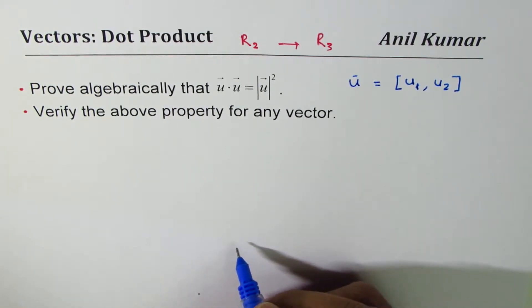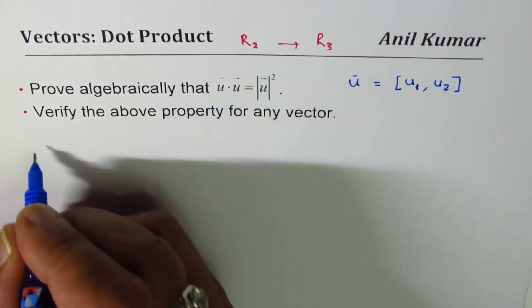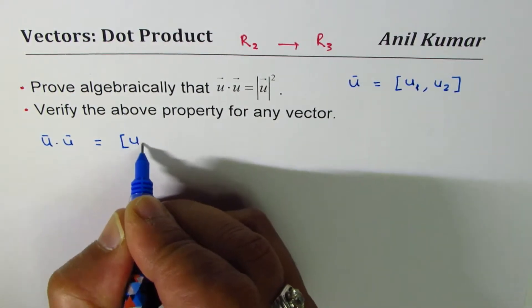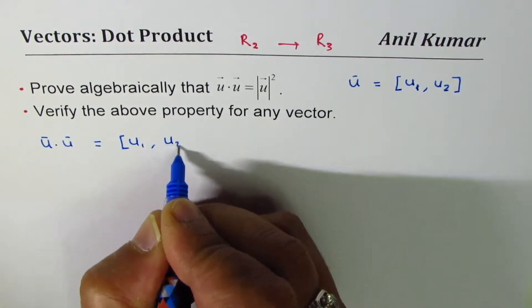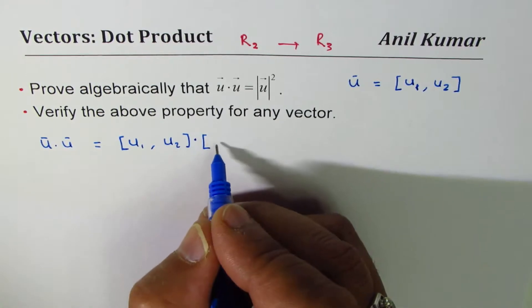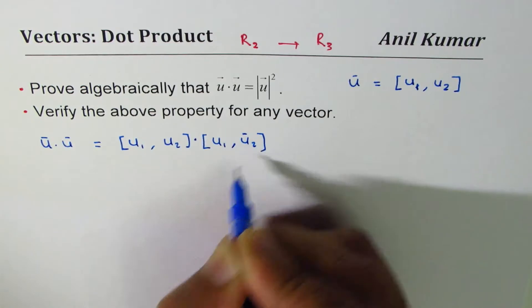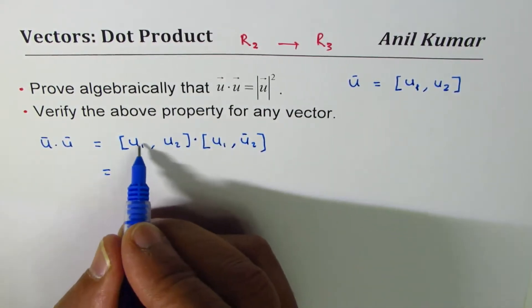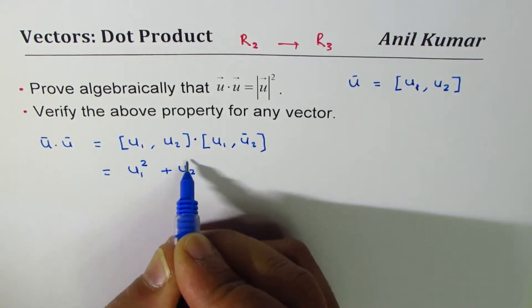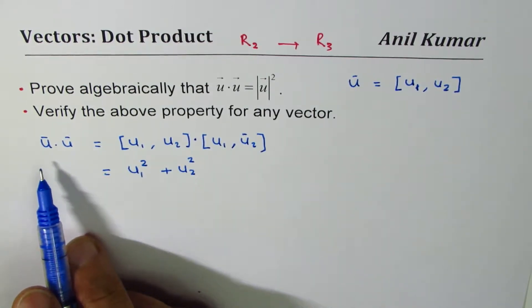Now u dot u will mean dot product of their components. These are numbers in x and y direction. So the result will be u1 squared plus u2 squared. That is the result of the dot product of vector by itself.